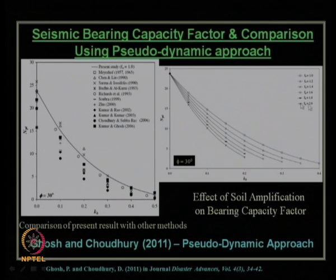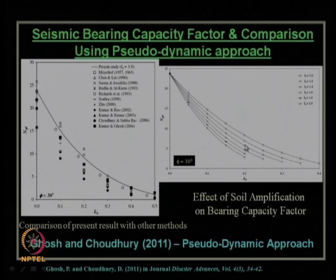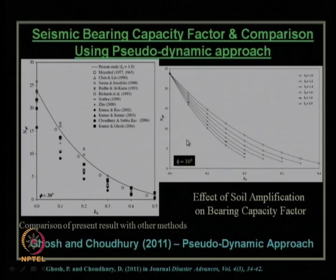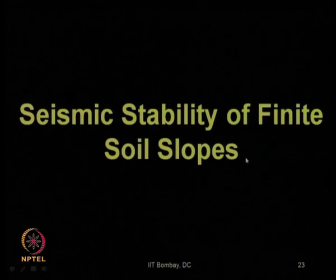Now let us move to another subtopic: seismic stability of finite soil slopes. We will discuss the stability aspects of soil slopes and review classical theories in seismic slope stability analysis. There are several slope stability theories, but we will only consider those dealing with seismic theory — the extension of static slope stability analysis to seismic levels — all using pseudo-static or quasi-static approaches. The first is Terzaghi 1950; the next and still widely used is Newmark's sliding block analysis proposed in 1965.